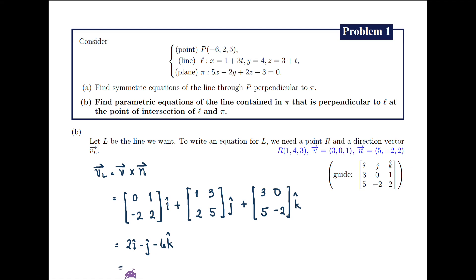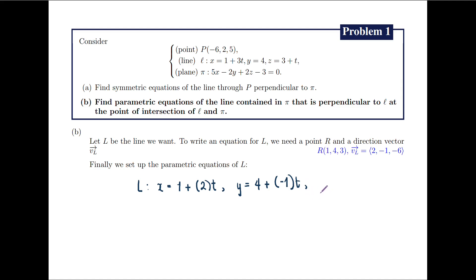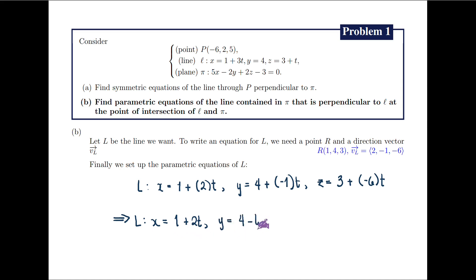Similarly, we can write it as follows. Finally, we set up the parametric equations for capital L. So we have x equals the x-coordinate of R, which is 1, plus the x-coordinate of V sub L, which is 2, times t. Then y equals the y-coordinate of R, which is 4, plus the y-coordinate of V sub L, which is negative 1, times t. And z equals the z-coordinate of R, which is 3, plus the z-coordinate of V sub L, which is negative 6, times t. Simplifying, we get the parametric equations: x equals 1 plus 2t, y equals 4 minus t, and z equals 3 minus 6t.